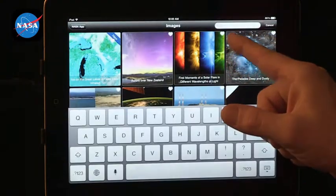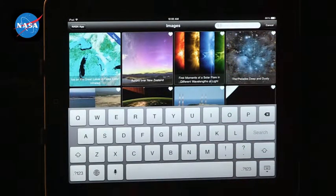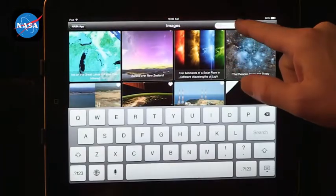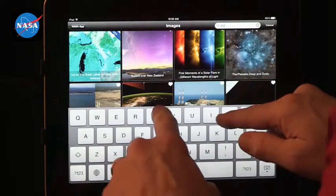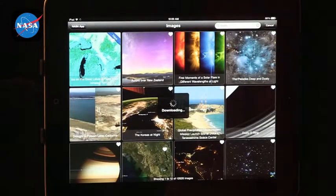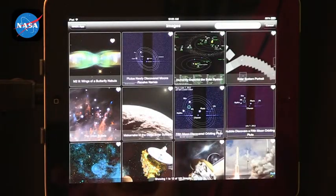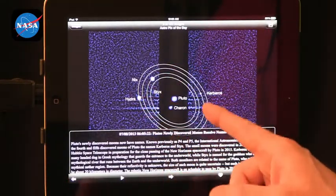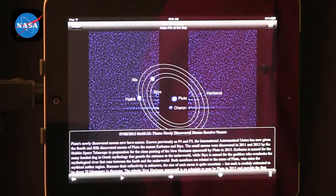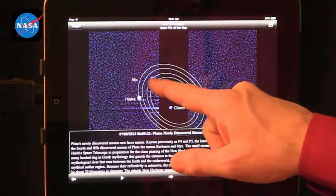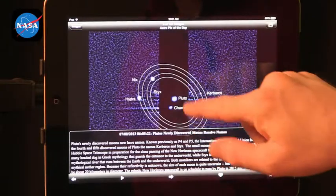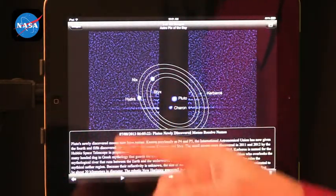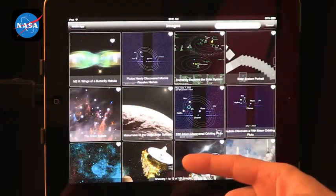You can also do a search for a specific phenomenon or a specific body in the sky. Let's say we're interested in Pluto. So a search like this would give you multiple views that have to do with Pluto. So for example, this view of Pluto and the newly discovered moon of Pluto, P5, that shows up somewhere here. So that's a way to keep exploring and look for specific items.